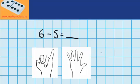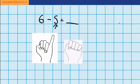Can you see an easy way that we could get rid of 5? That's right, we could just fold these fingers down. So now it's easy to see that 6 minus 5 equals 1.